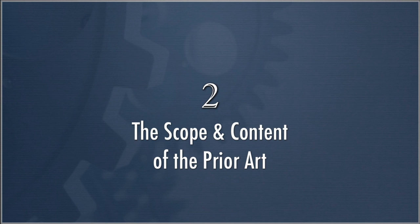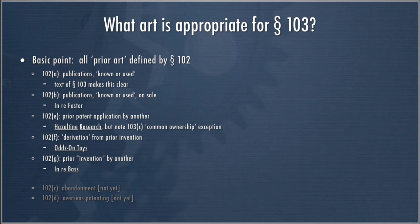The quick answer is that Section 102 defines what prior art is. If you have prior art that fits into the various sections of 102, then that is prior art for purposes of Section 103. Until March 16, 2013, all patents filed by then will be under the old law, which will have invention date as a key date for 102(a). After that date, those patents filed after that date will have effective filing date as the key date. So that'll change the parameters of prior art.